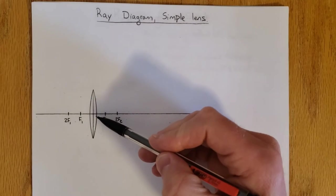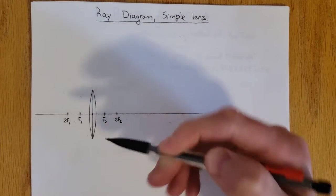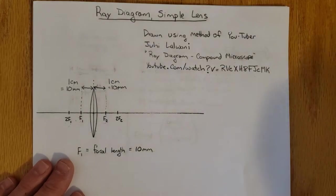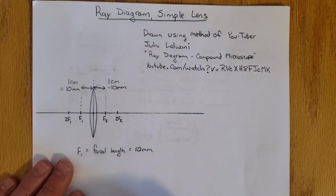I've already drawn a simple lens here centered upon a principal axis with my focal points labeled. I actually drew this using the method from another YouTube video. This is the link and I'll put it in my comments.